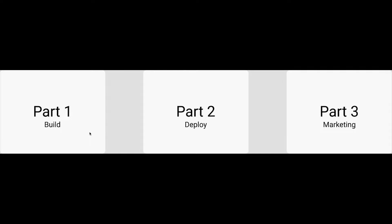I chose to focus on home improvement because I think it's a niche that's more accessible for beginners. Even if your marketing campaigns aren't performing optimally, the profits on a kitchen or bathroom remodel can usually sustain the error margin when you're first starting out. A home improvement project can range from a couple thousand dollars all the way to fifty or a hundred thousand for a big basement remodel or a fancy kitchen. By the end of the series, you'll be able to help local businesses generate leads and feel comfortable offering your services.